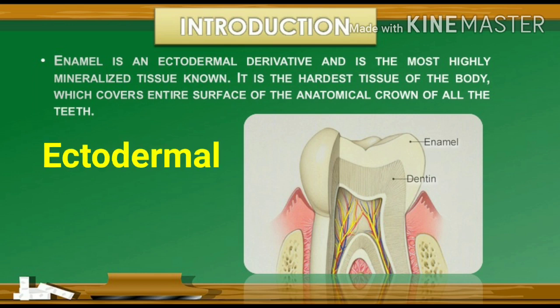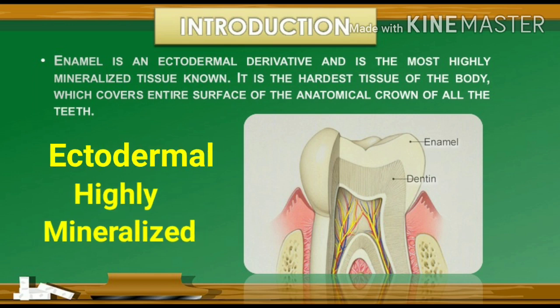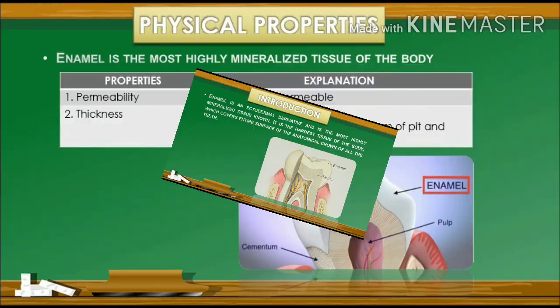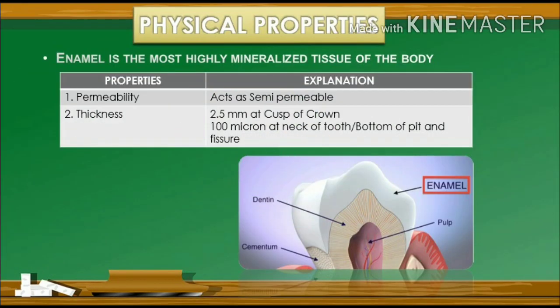Enamel is an ectodermal derivative and is the most highly mineralized tissue known — it is the hardest tissue of the body, covering the entire surface of the anatomical crown of all the teeth.